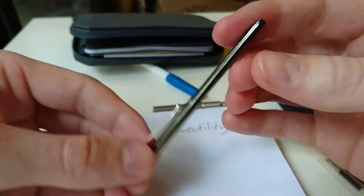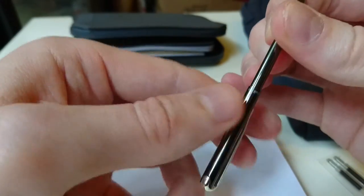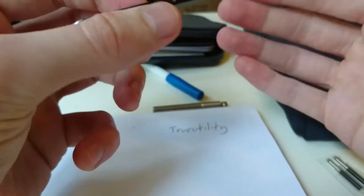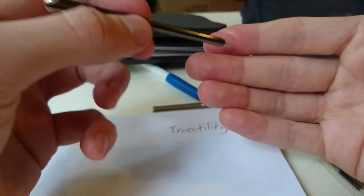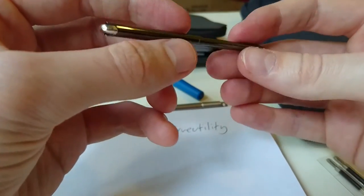And this one extends by twisting it. So you're not going to have any problems with it collapsing whilst you're using it for writing.